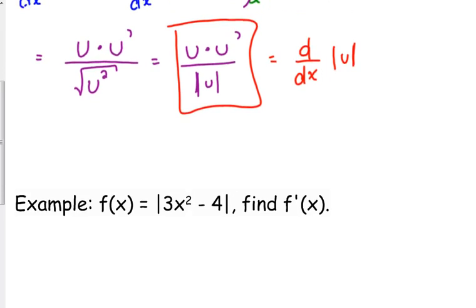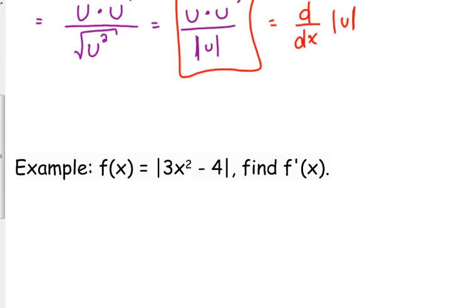Let's think about this for a second. Let's do one like this and then we'll plug in a specific value. Let's say that our function is the absolute value of 3x squared minus 4. And we want to find the derivative of that.